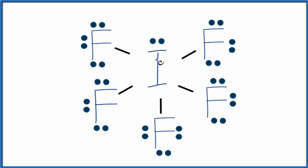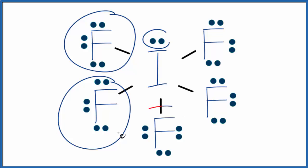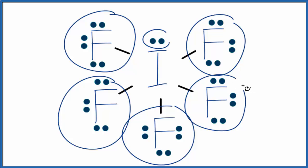We can imagine all of these things pushing away, the lone pair and all of these fluorine atoms pushing away from each other. That will result in the molecular geometry for IF5. Let's take a look at that. Let's visualize it.